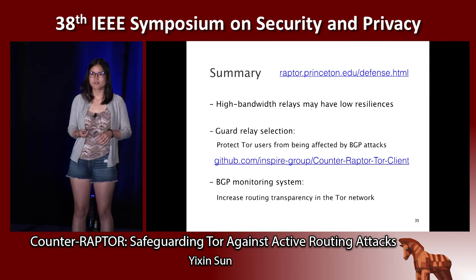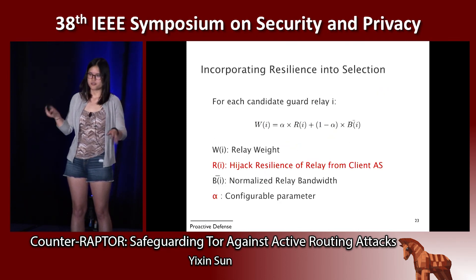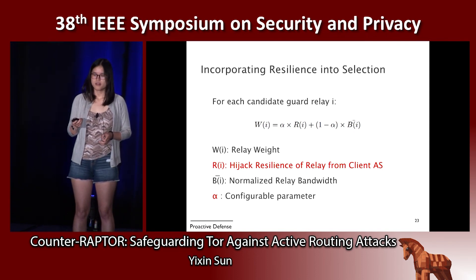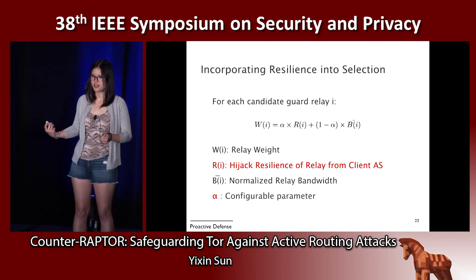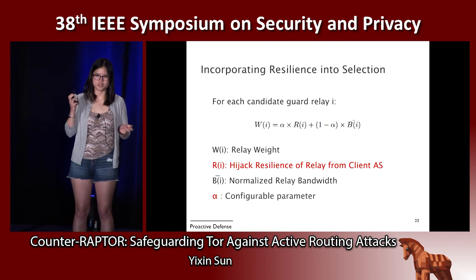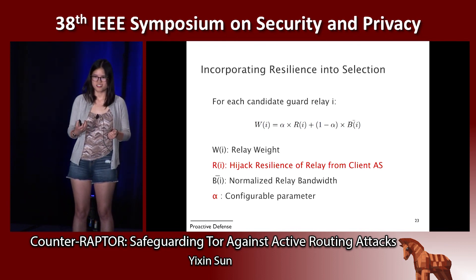Question: Can you say a word on Counter-Raptor's effect on passive resilience — the ability to do correlation attacks? Answer: In order to do correlation analysis on Tor, the adversary needs to be on both ends of the communication. We're preventing the adversary from getting onto the client and guard end. The follow-up concern is whether node selection becomes more predictable. Depending on your definition of predictable, we're shifting focus from purely bandwidth-based selection toward picking more resilient relays based on client location, so clients have lower chances of being affected if a hijack happens on their guard.